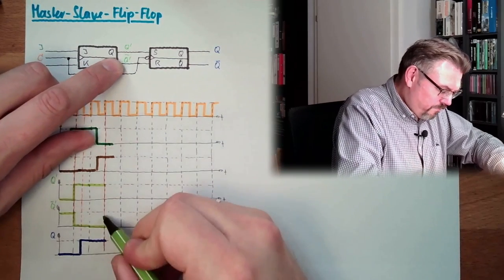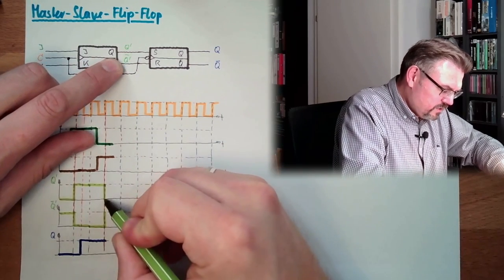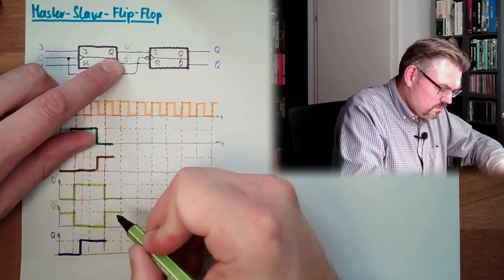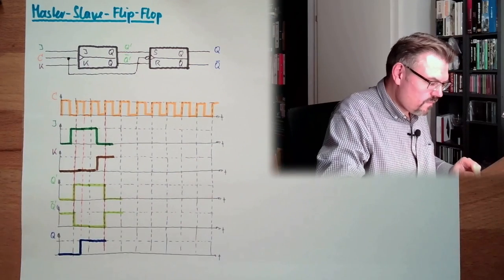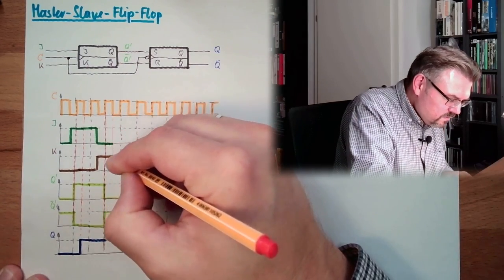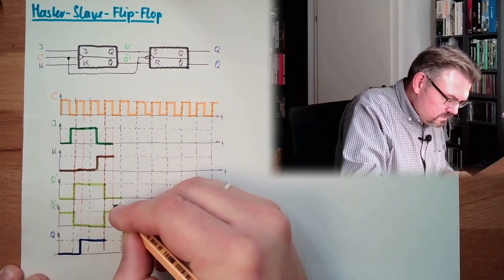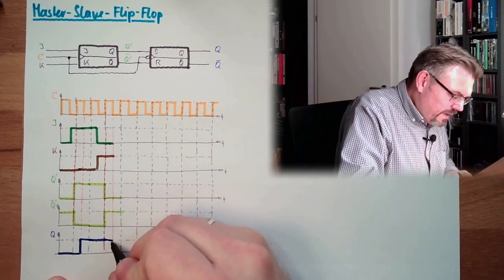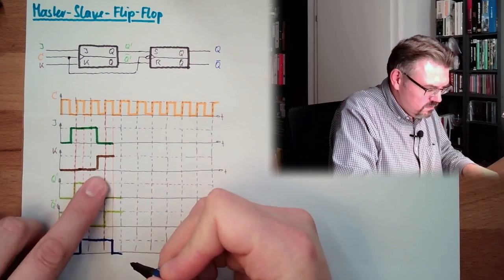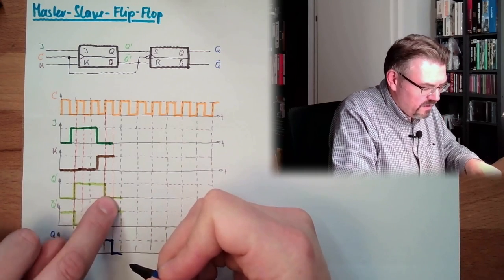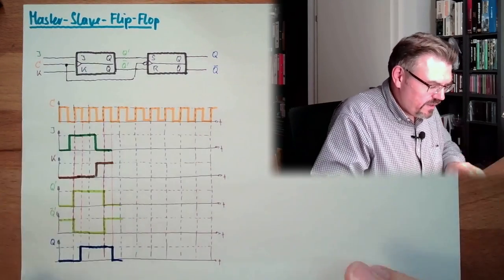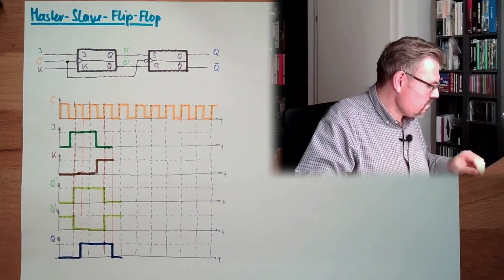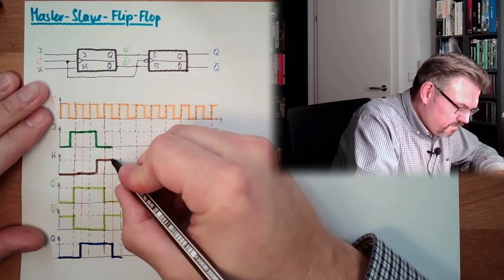So here, back, this will change. And at this falling trigger, this change will appear at the output. Here we take it in. And at the falling trigger, it will appear at the output.